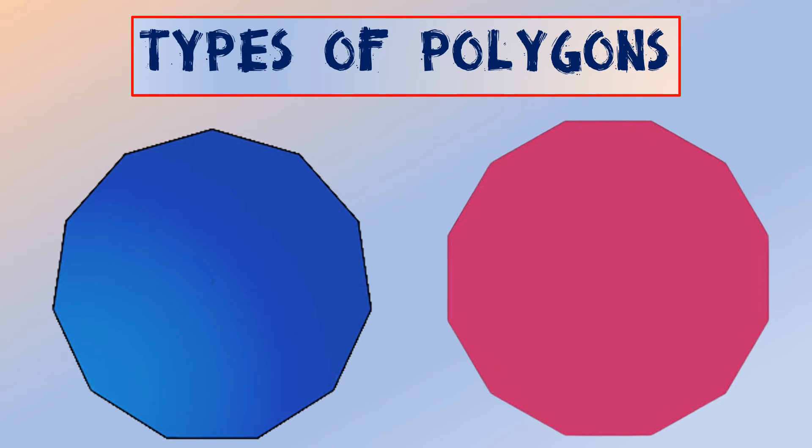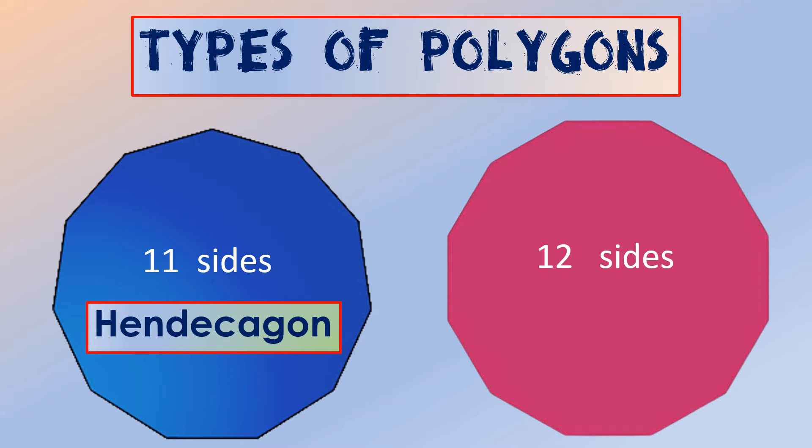A closed figure with eleven sides is called a hendecagon, and if the figure has twelve sides, it is called a dodecagon.